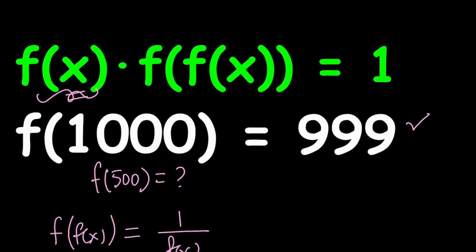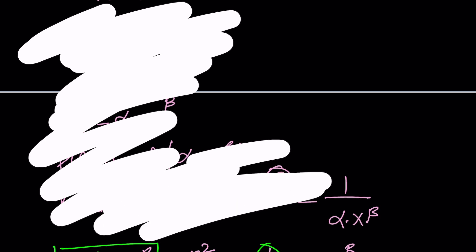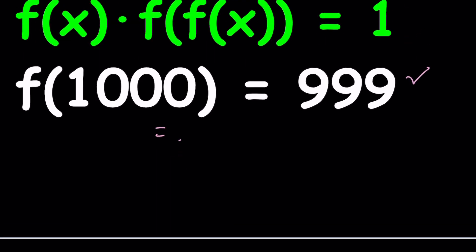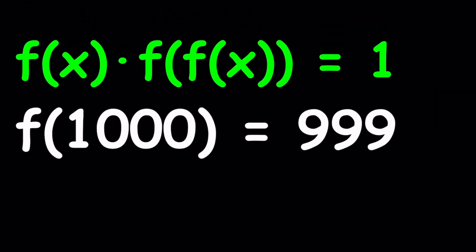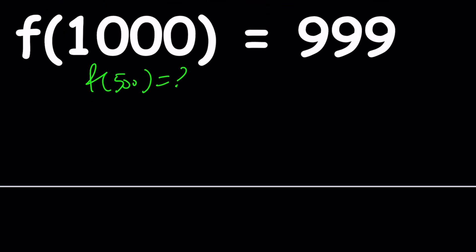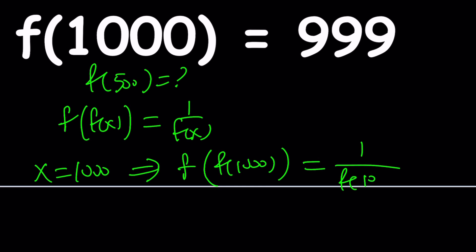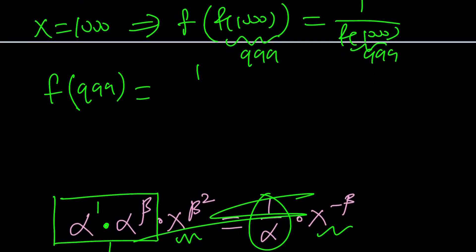Instead of finding f(x) explicitly, let's find f(500) directly. Since we know f(1000) = 999, let's replace x with 1000 in the equation f(f(x)) = 1/f(x). That gives f(f(1000)) = 1/f(1000). Since f(1000) = 999, we get f(999) = 1/999. So we now have two known points: f(1000) = 999 and f(999) = 1/999.